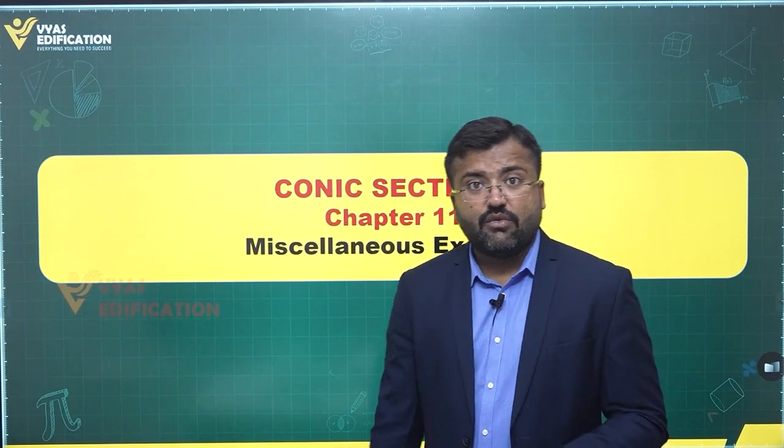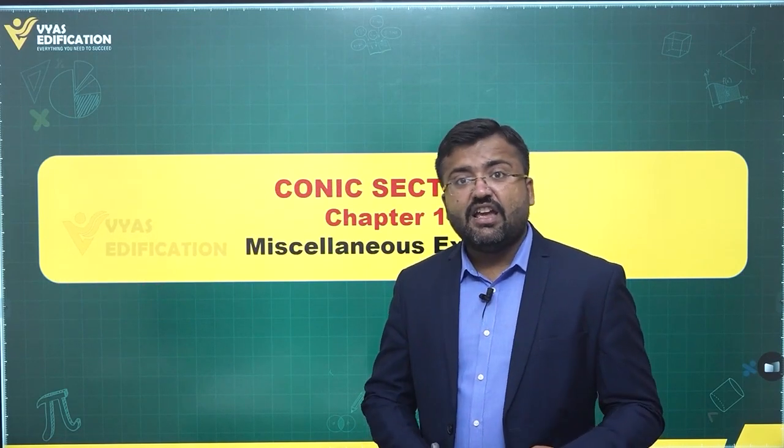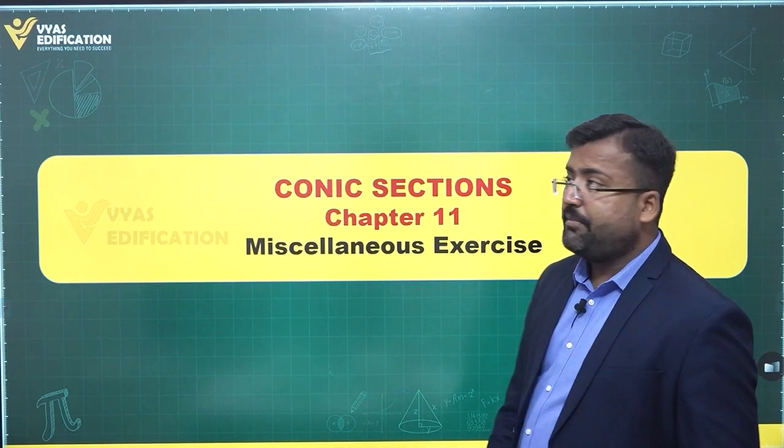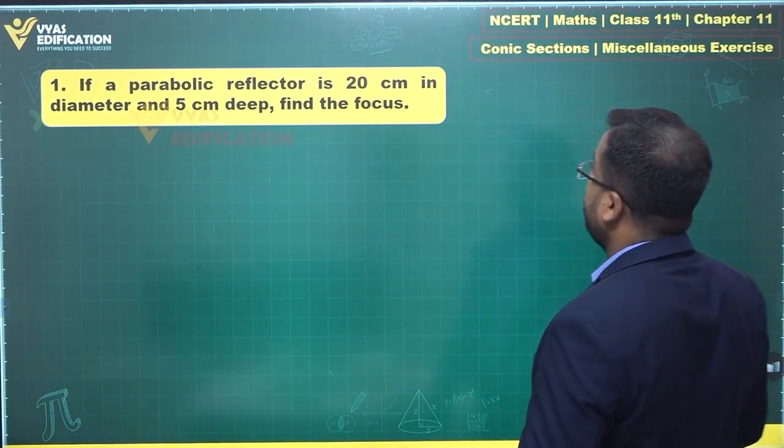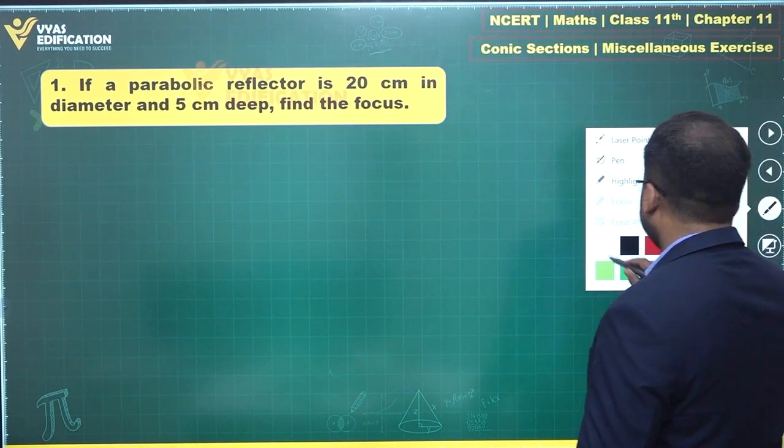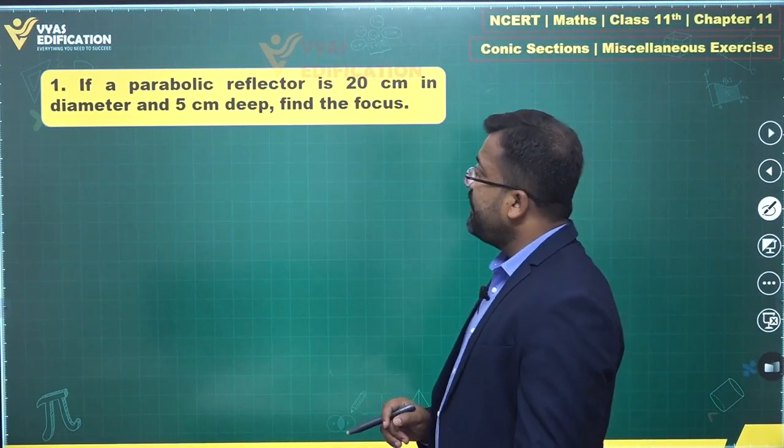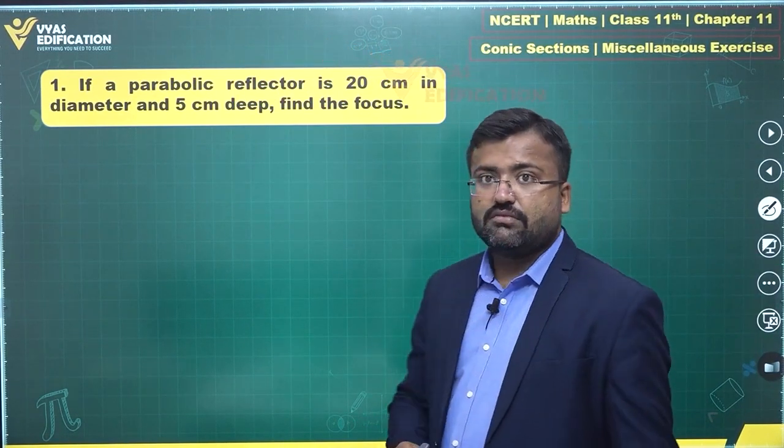Those are some properties which we'll be using over here, one by one. The first question says, if a parabolic reflector is 20 centimeter in diameter and 5 centimeter deep, find the focus.